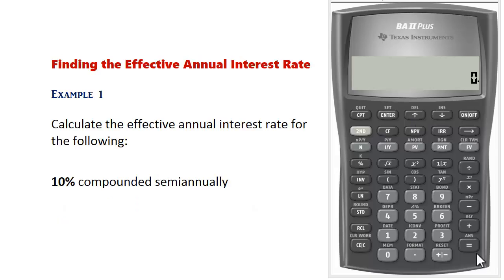Next, let's look at a few examples. We will calculate the effective annual rate, which means the interest rate is compounded once a year. In this example, we will calculate the effective annual rate for 10% compounded semiannually.